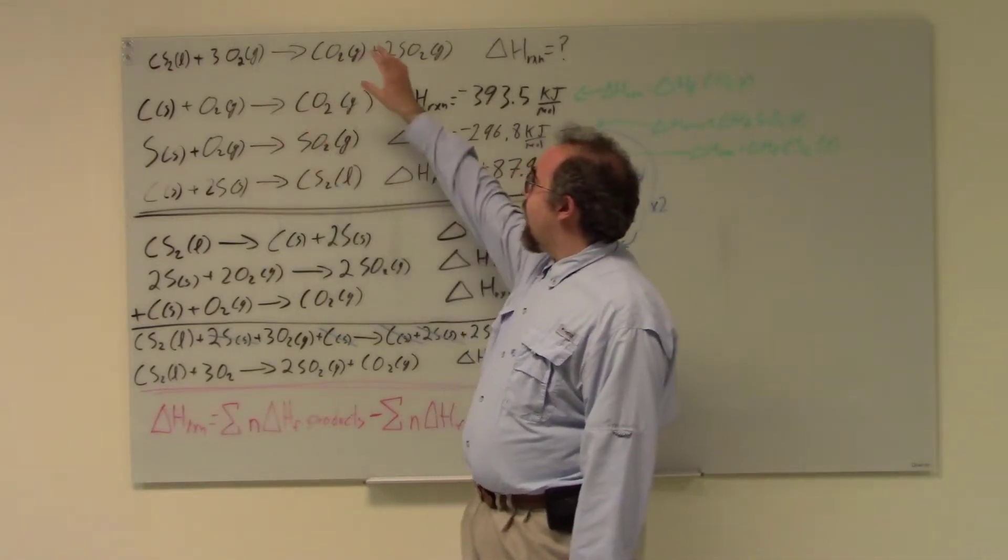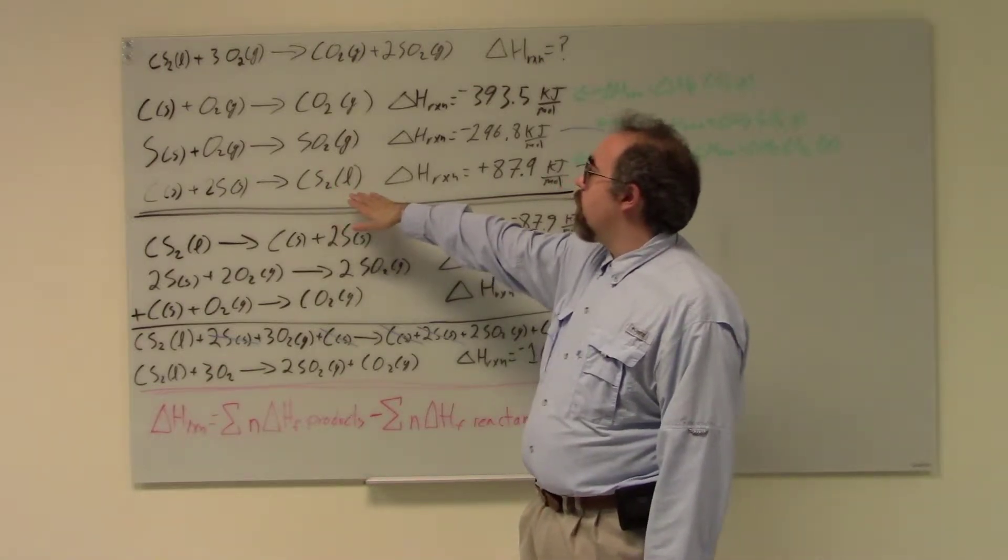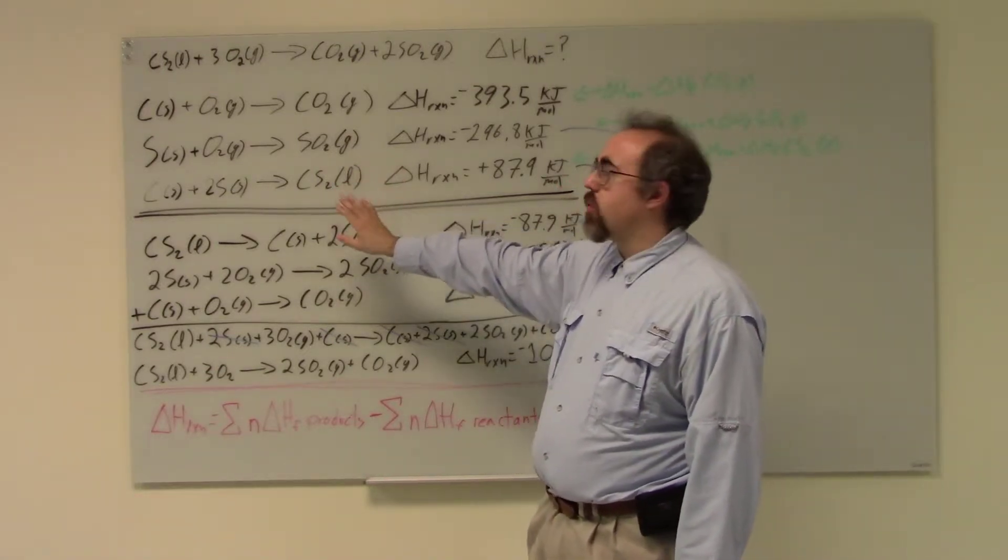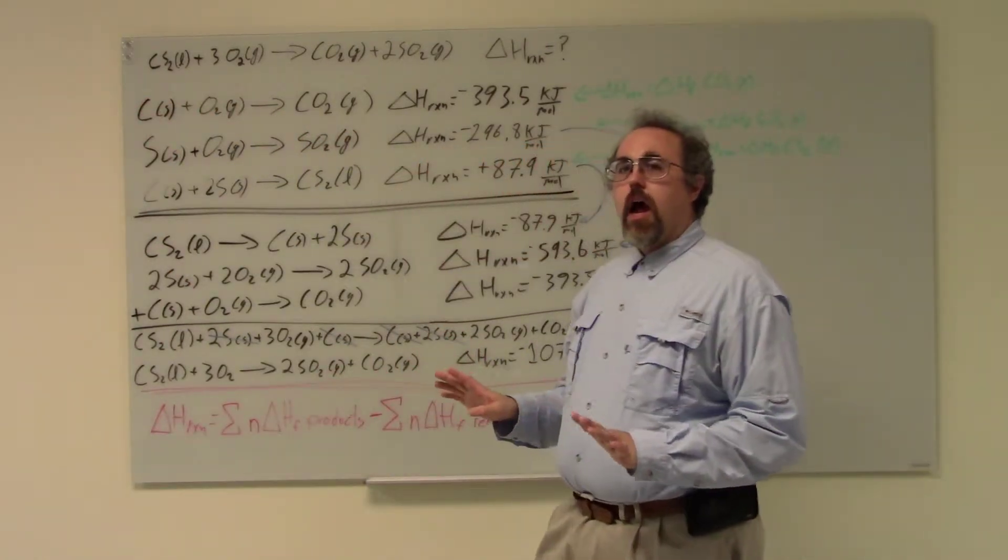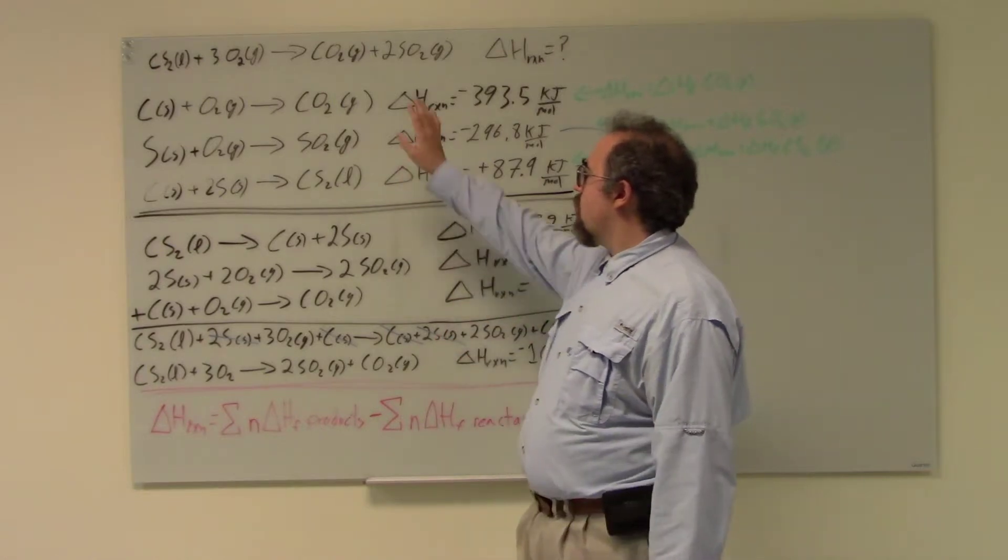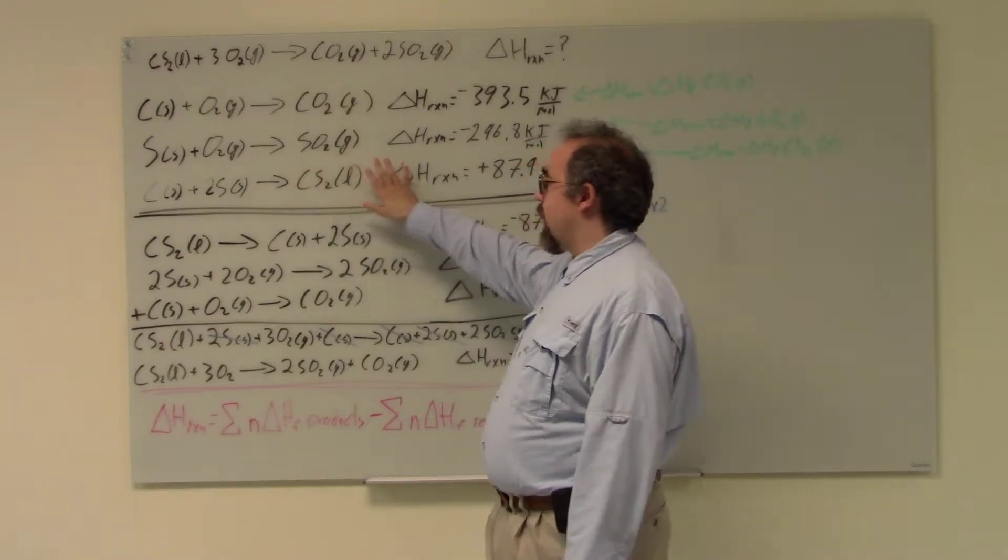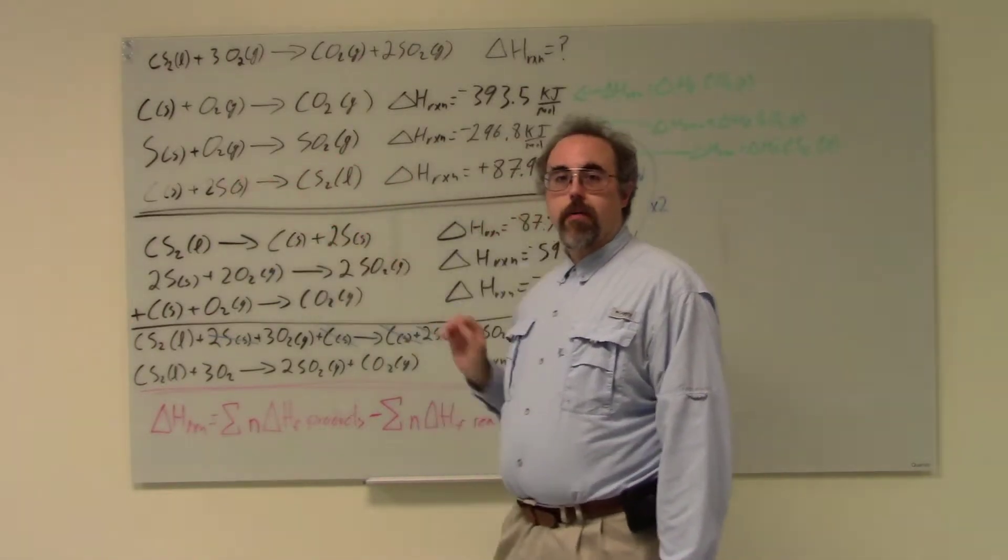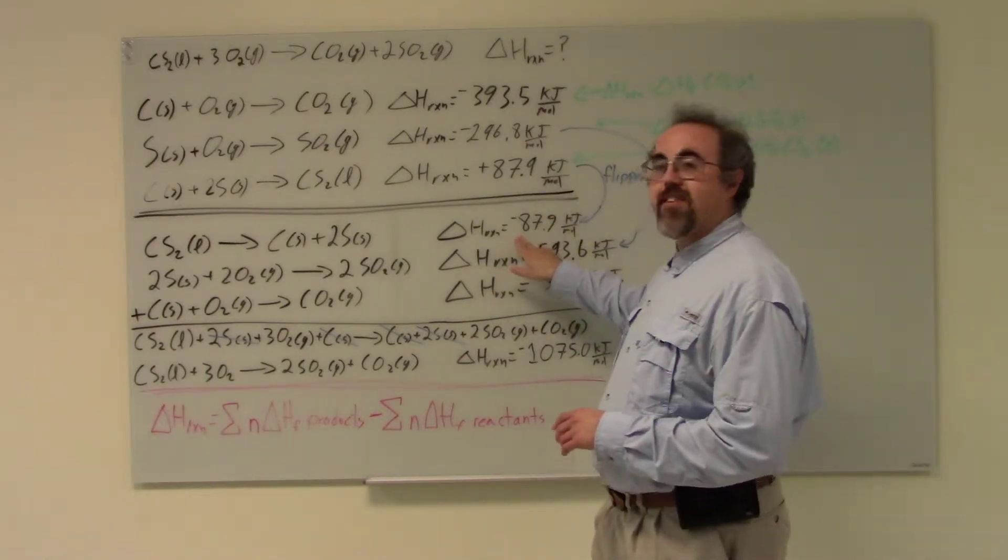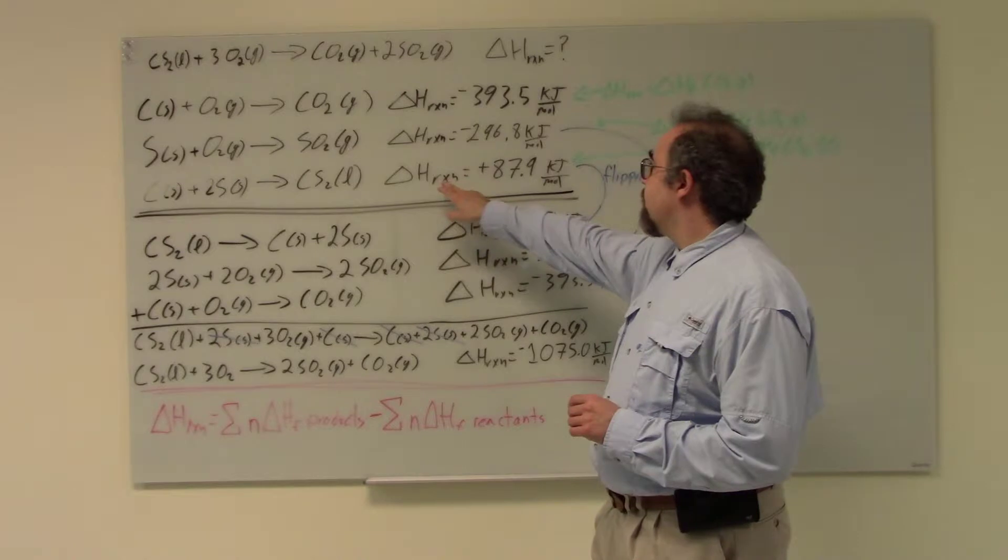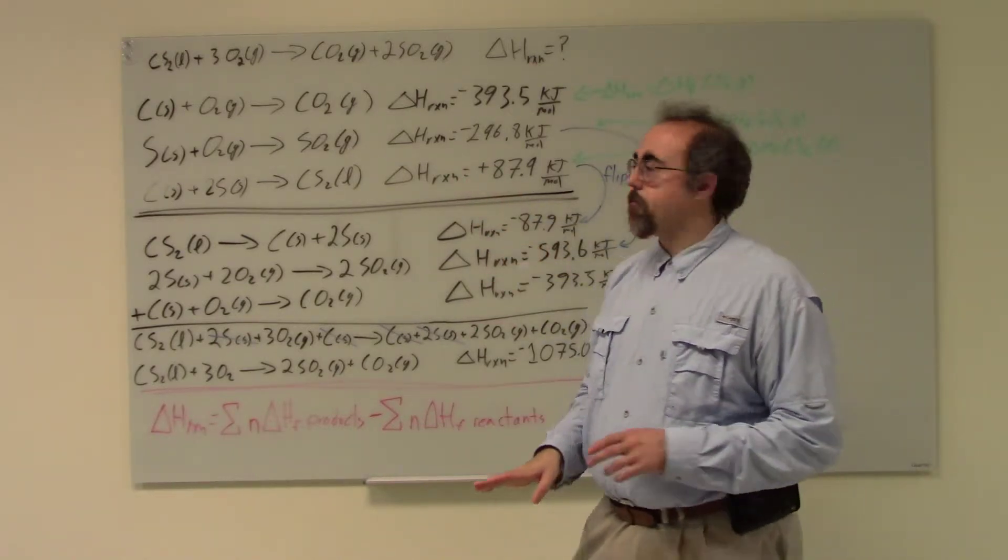This bottom one, the CS2 liquid - and phases are important here, what state these are in will change the heats of reactions - this CS2 is my product in this reaction, but it's actually my reactant to start with. So I'm going to start with this guy, but I'm going to flip it, make my reactants my products and my products my reactants. Now when I flip a reaction like that, I'm going to change the sign on my delta H. See how this delta H is positive? Now this one is negative. All I've done is flipped it.